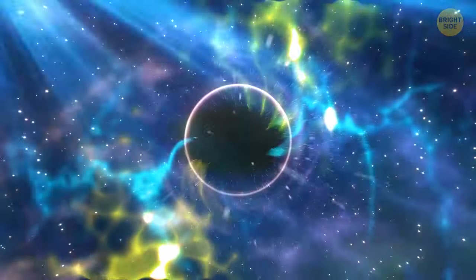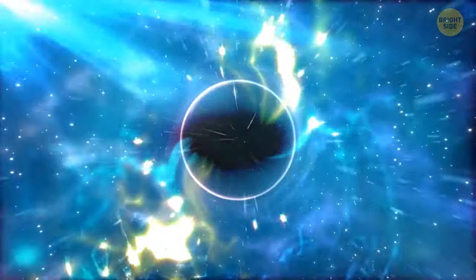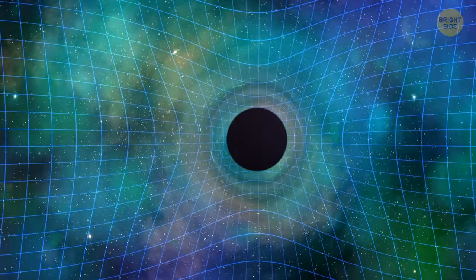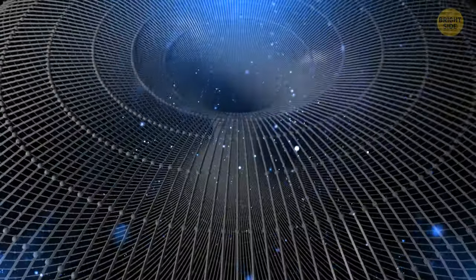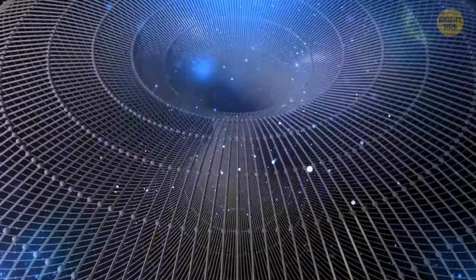At least we know what black holes look like. Well, kind of. It's actually the shadow of a black hole's event horizon, visible against the glowing, superheated material falling inside the hole.